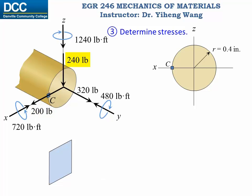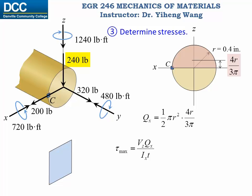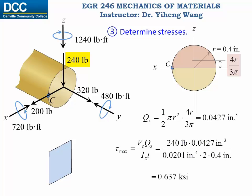For the shear force of 240 pounds along the negative z direction, since point C is along the centroidal x-axis, the shear stress at point C is maximum, determined by the shear formula. Qx is determined by the shadowed area above the x-axis. For this semicircle, the centroidal distance is given by 4r over 3π. Qx equals the area of the semicircle multiplied by this centroidal distance from the x-axis. Substituting in, we calculate the maximum shear stress and determine the direction to be vertically downward.